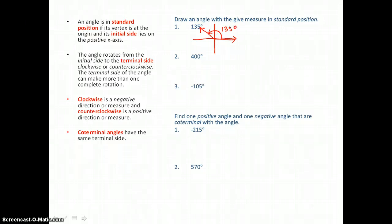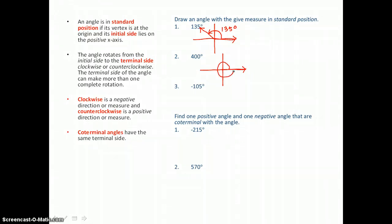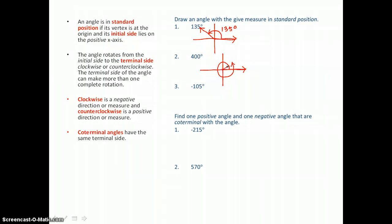Now we'll graph a 400 degree angle in standard position. We'll start on the positive x-axis with the initial side. We'll rotate in the positive direction again. This time we're going to rotate a full circle, 360 degrees, and 40 degrees more into the first quadrant, so that we've gone a total of 400 degrees.